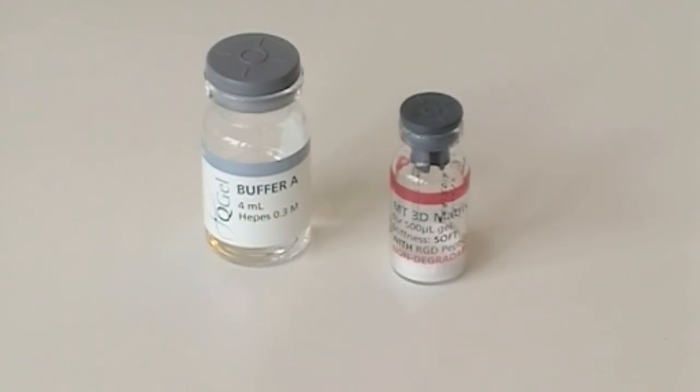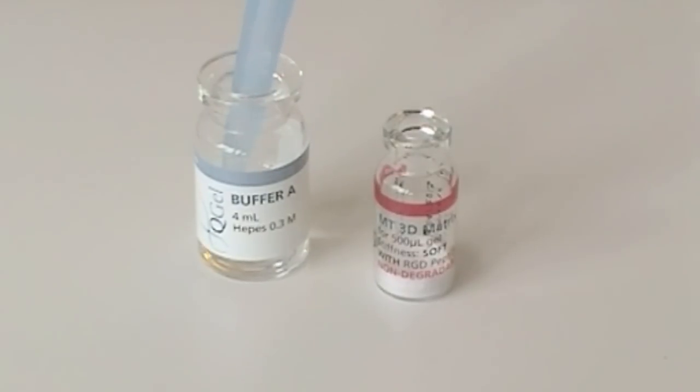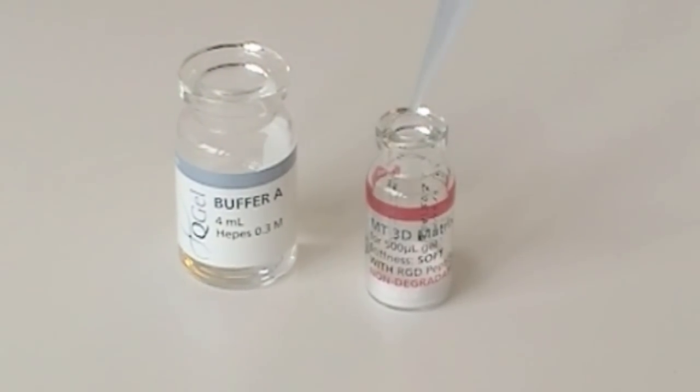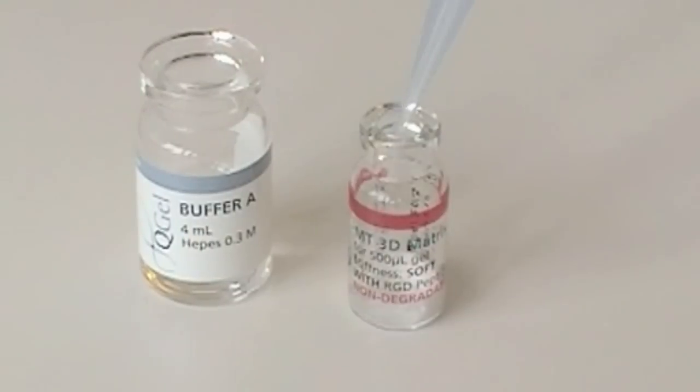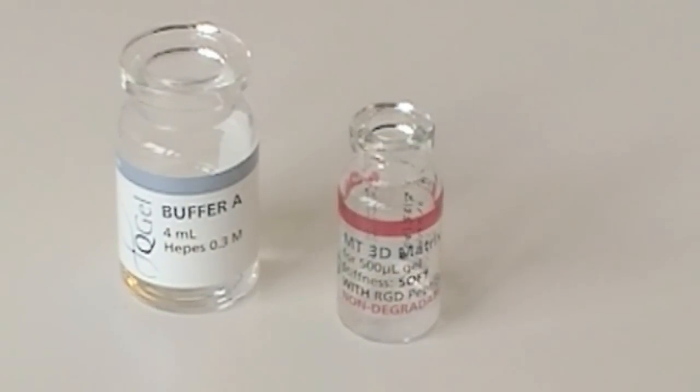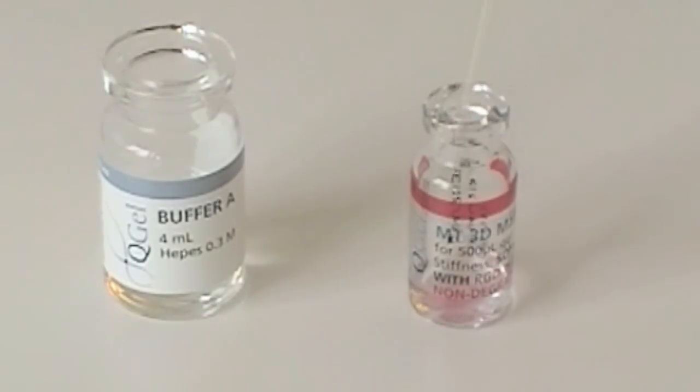Prepare the vials and cap them and pipette 400 microliters from the Q-Gel buffer and add to the vial containing Q-Gel MT 3D matrix powder. You will notice how it dissolves, but be sure to immediately vortex the vial for 10 seconds and then add 100 microliters of your cell suspension.